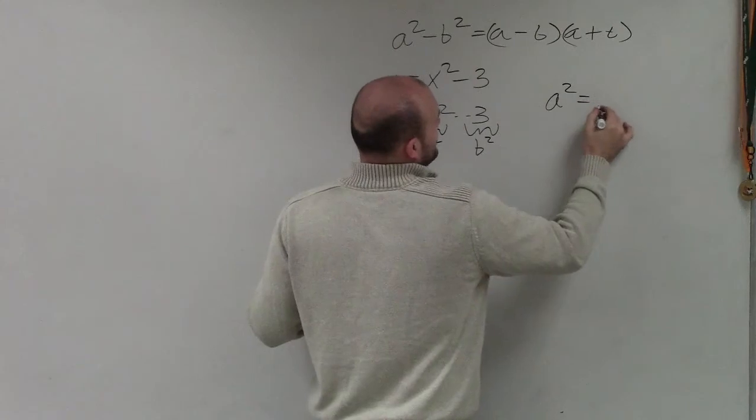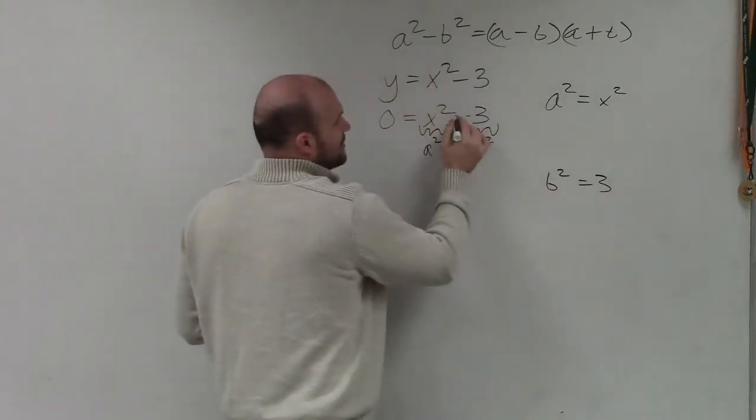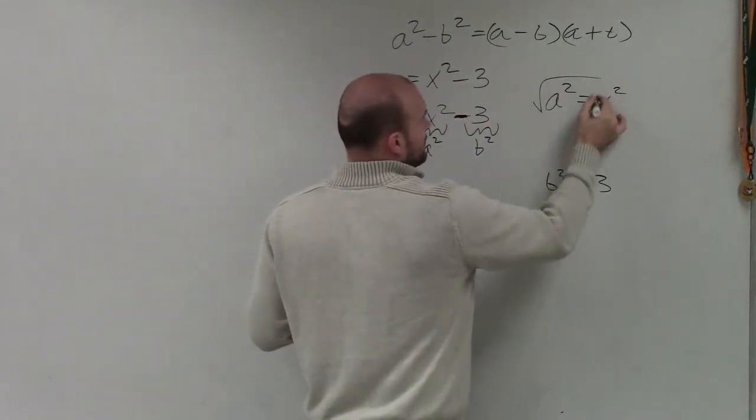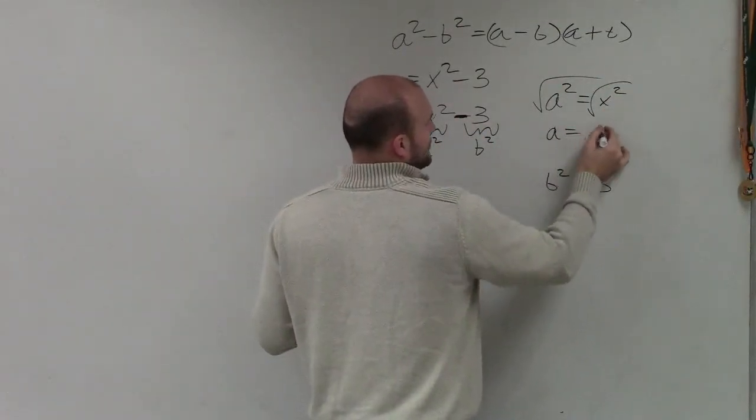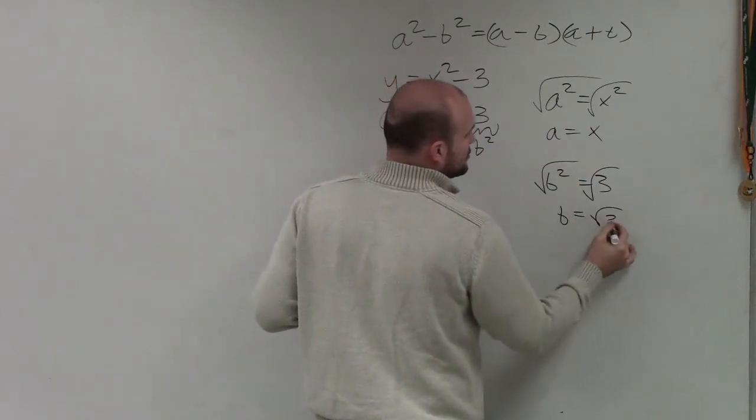So I can say a squared equals x squared and b squared equals 3. Again, we're not going to worry about the negative. So to solve for a, I take the square root, and a equals x. To solve for b, I take the square root, and b equals the square root of 3.